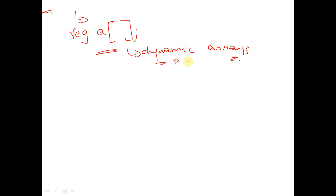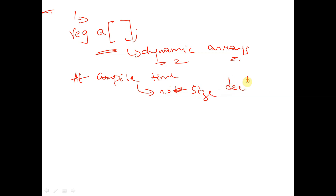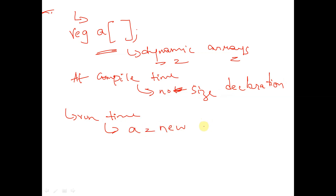In the case of a dynamic array, there is no need to specify the size of the array at compile time — no size declaration at compile time. At run time, we will declare the size of the dynamic array by using the keyword 'new'. So by using the keyword 'new' we will declare the size of the dynamic array.